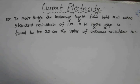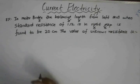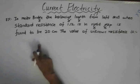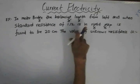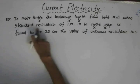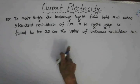This is a very simple example on meter bridge. In this example, the balancing length from the left end, when the standard resistance of one ohm is in the right gap, is found to be 20 centimeters. That means the balancing length from the left end of the meter bridge is 20 centimeters. The value of the standard resistance is one ohm.